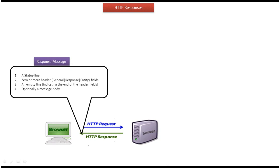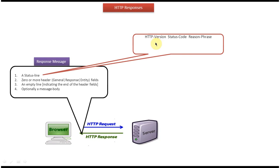Now we will see the detail about the status line. The status line has three parts: the first one is HTTP version, the second one is status code, and the third one is the reason phrase. In this sample status line, you can see HTTP version is 1.1, the status code is 404, and the reason phrase is Not Found.